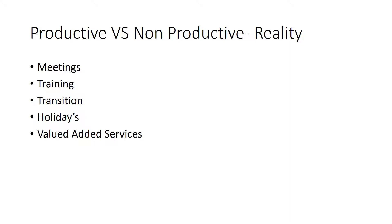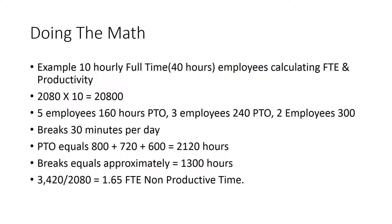Let's do the math. Say you have 10 hourly full-time employees — that's 10 FTEs. Normally that's 2,080 hours a year: 40 hours times 52 weeks equals 2,080 hours. Times 10 employees, you get 20,800 total hours to work with. Now let's start breaking that down.